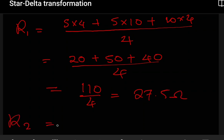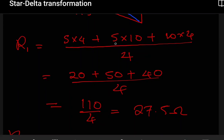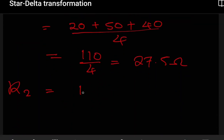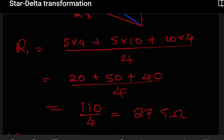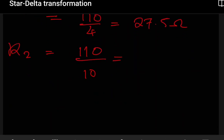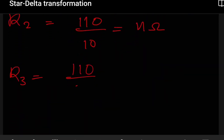We can find R2. The numerator is the same — it's still going to be 5 by 4, 5 by 10, and 10 by 4, so it's still going to be 110. The difference is the denominator. Since we are finding R2, R2 is directly related to the 5 and the 4, so we'll be dividing by the 10 ohms. R2 comes out as 11 ohms. Then for R3, the numerator is still the same, but R3 is directly connected to the 10 ohm and the 4 ohms, so we'll be dividing by the 5 ohms. R3 comes out as 22 ohms. So we now have R1, R2, and R3.